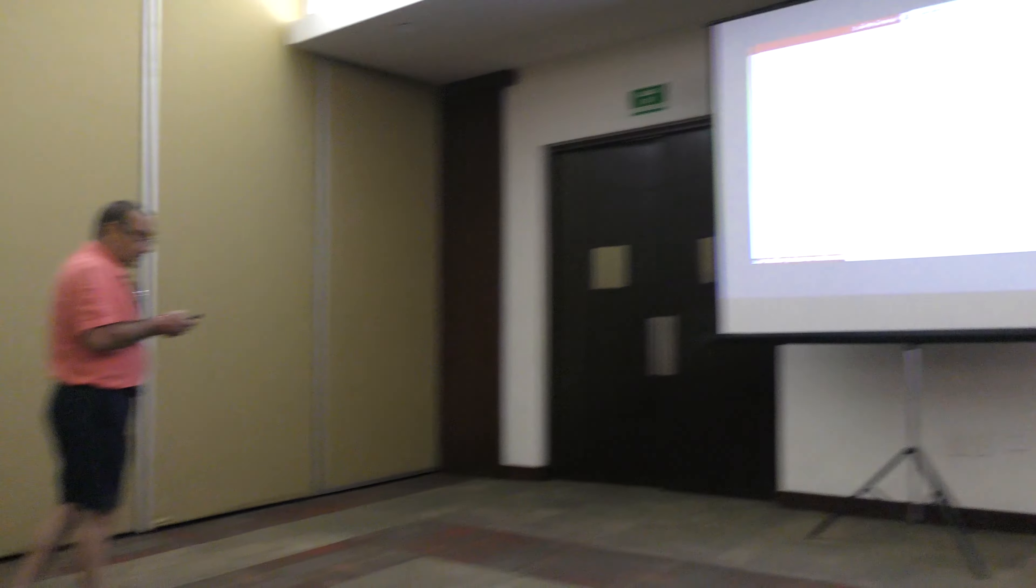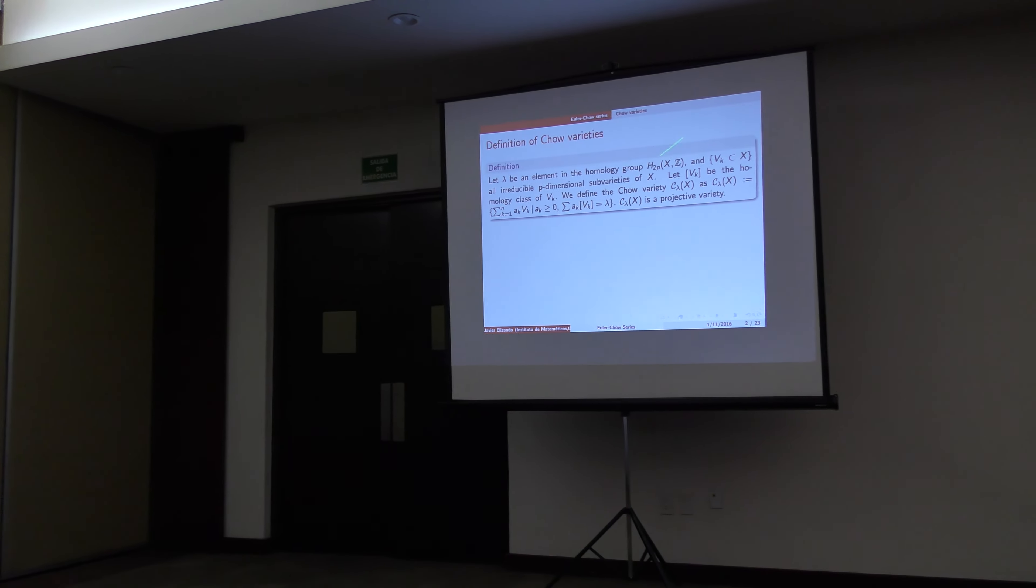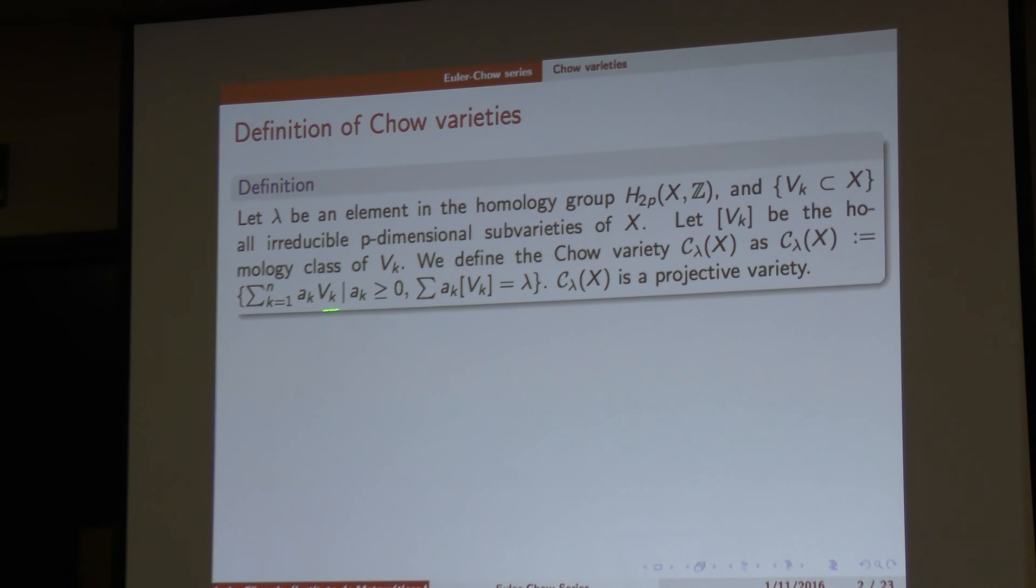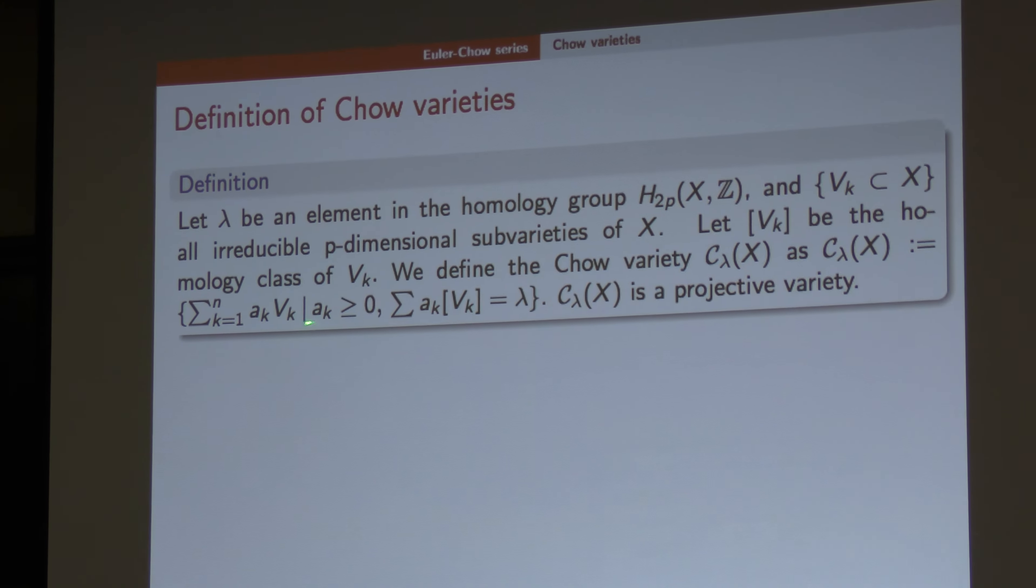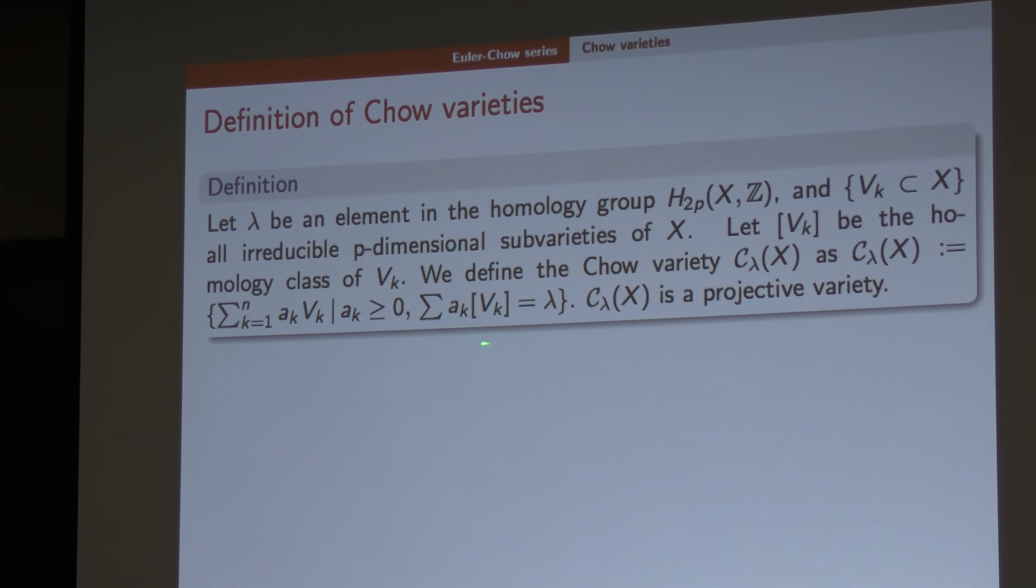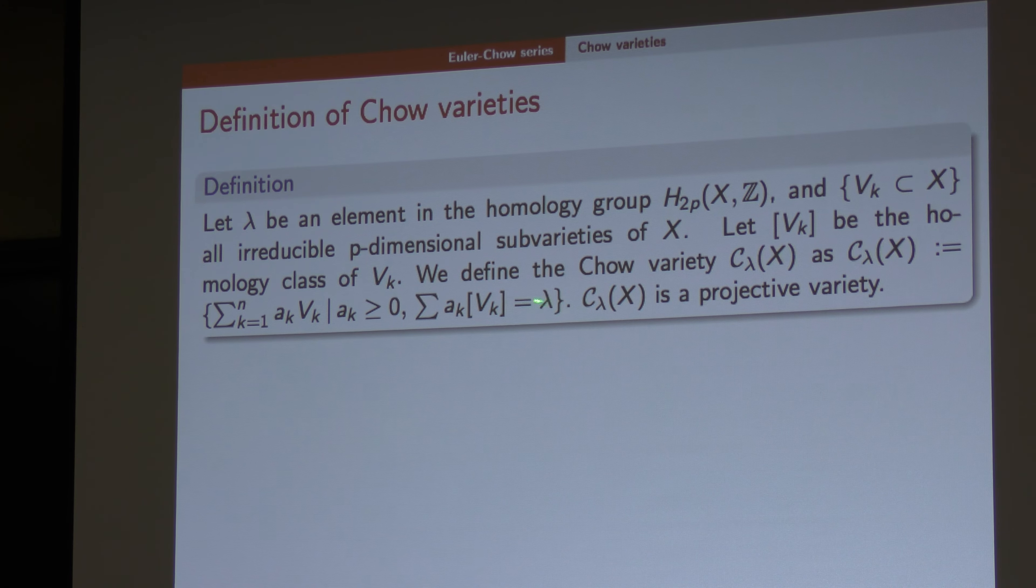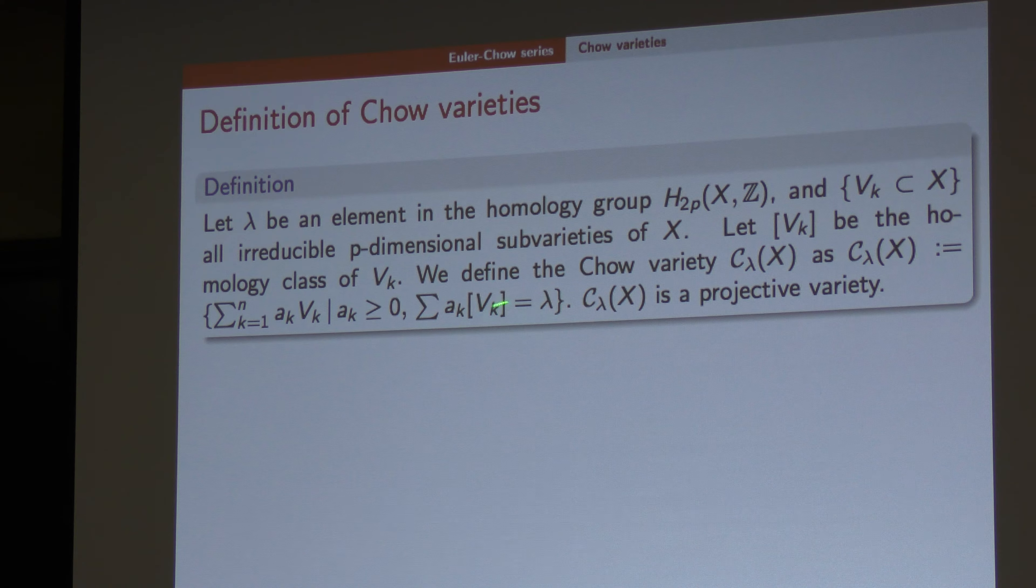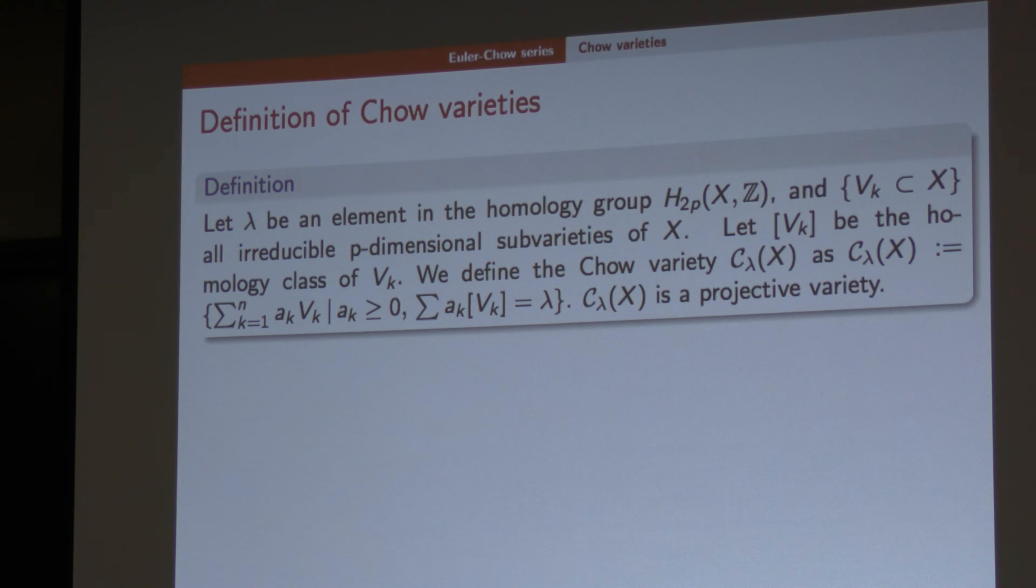So, first of all, I have to mention that an effective cycle is something like this. This big case is an irreducible projective variety, a subvariety of X. We fix a class of homology, lambda, and we take all the cycles, effective cycles, which commonly classes lambda.